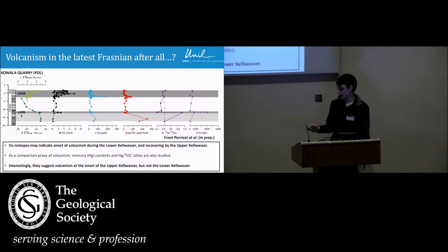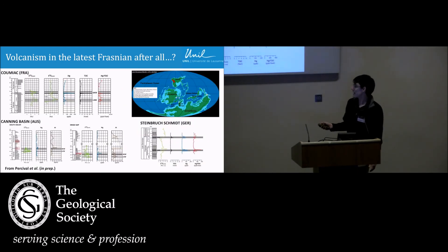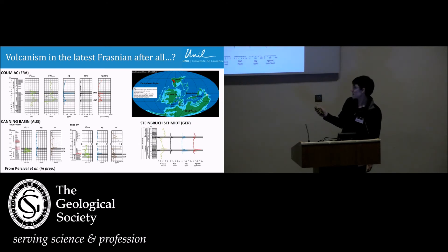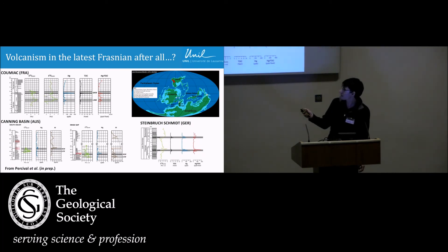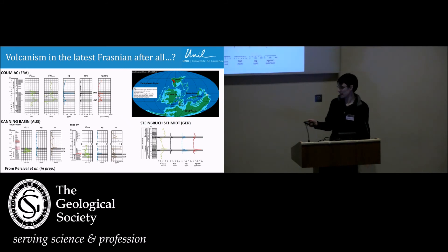This is, of course, just one record. We also tried osmium isotopes for Steinbruch Schmidt in Germany, but unfortunately that section seems to have been somewhat baked over the last 350 million years — the osmium isotopes came out as crazy, basically meaningless values. The mercury had a bit more success: we did see some nice peaks in mercury and Hg/TOC, but this section has been baked and the TOC values are probably much lower than at the time of deposition. In Couméac in France, we do see some spikes in mercury at both the upper and lower Kellwassers, though the values are astonishingly high for carbonates. And in the Canning Basin carbonates from Australia, we have very low mercury values and no real perturbations.